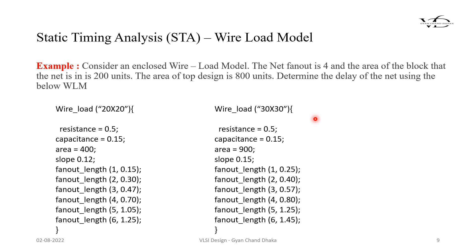Through this example we will understand how a wire load model looks and how the delay is calculated based on the wire load model. Consider an enclosed wire load model. The net fanout is 4 — that is the net for which we have to find the net delay. Its fanout is 4 and the area of the block the net is in is 200 units. The area of the top design is 800 units. So the net is sitting in a sub-block, and the top design in which this sub-block is sitting has an area of 800 units.